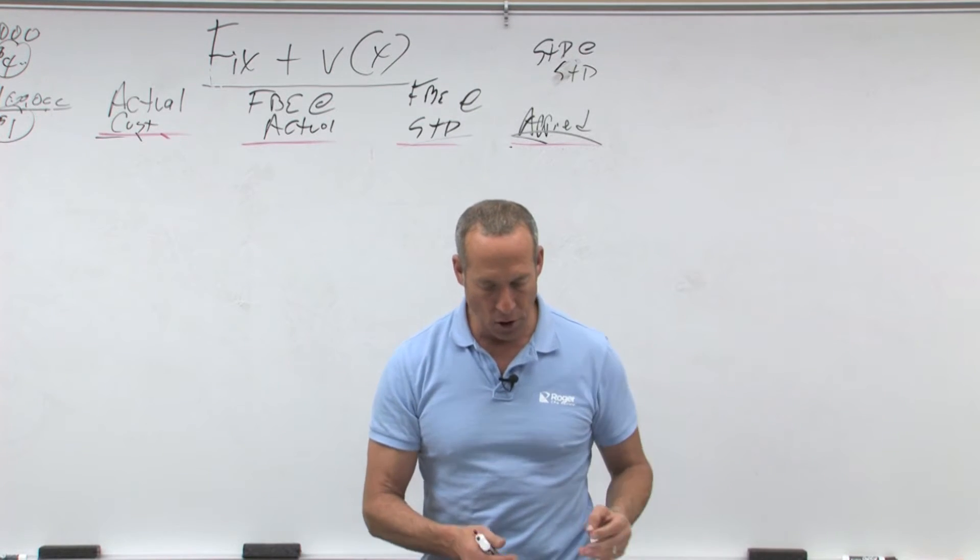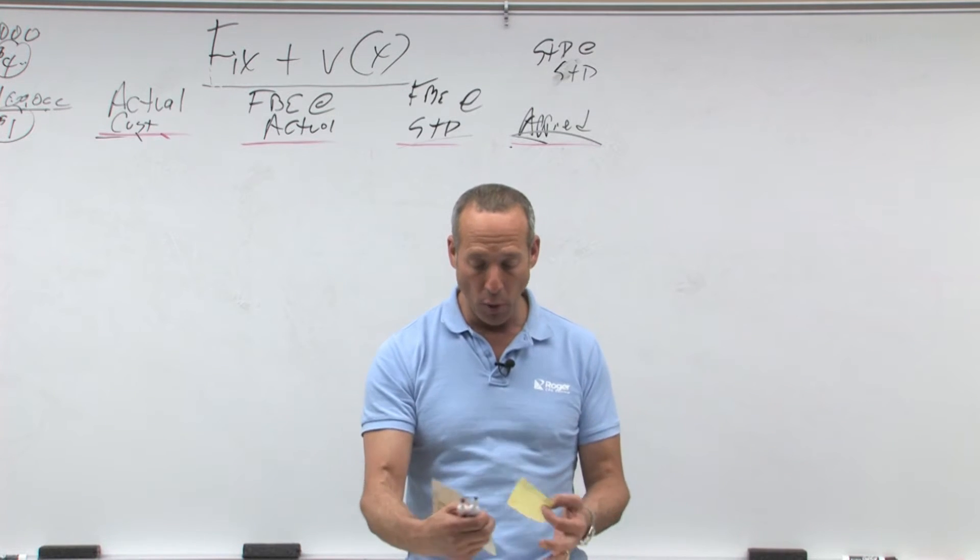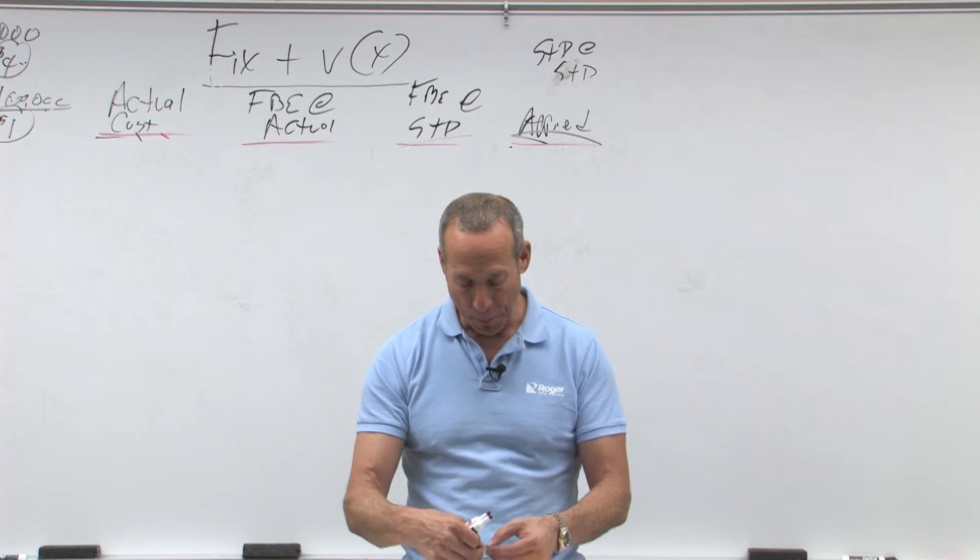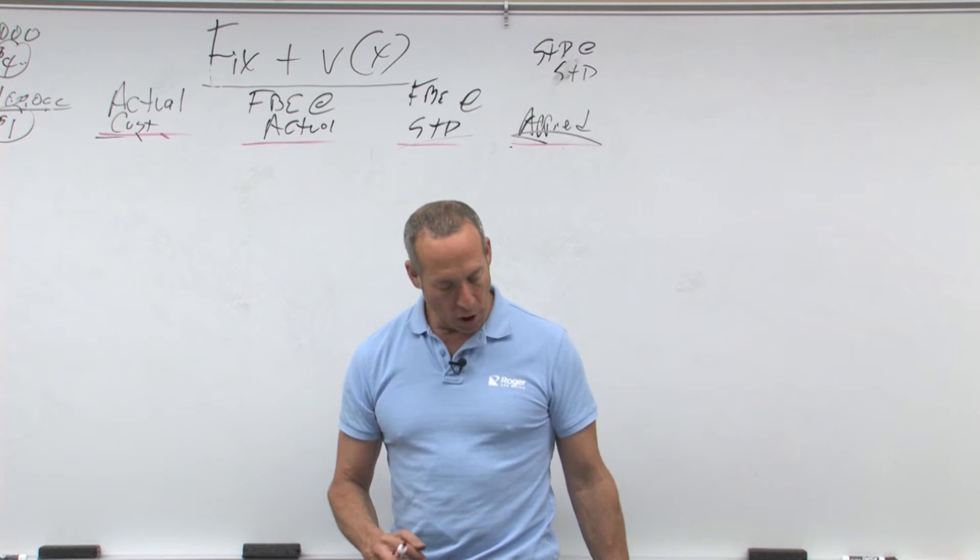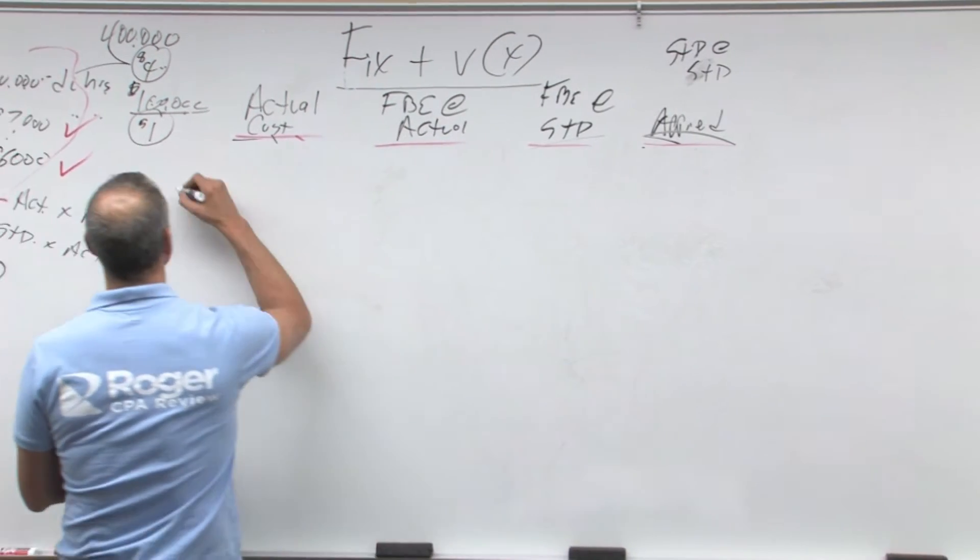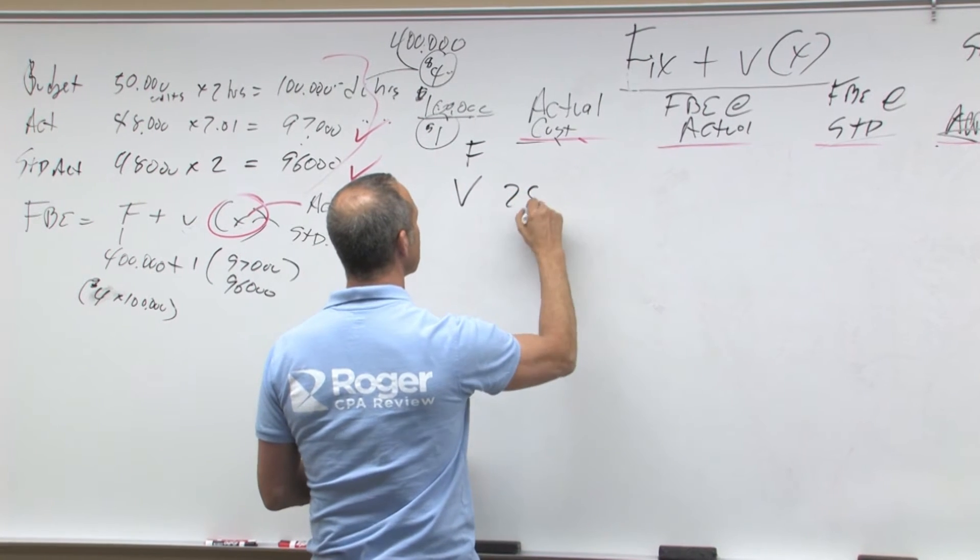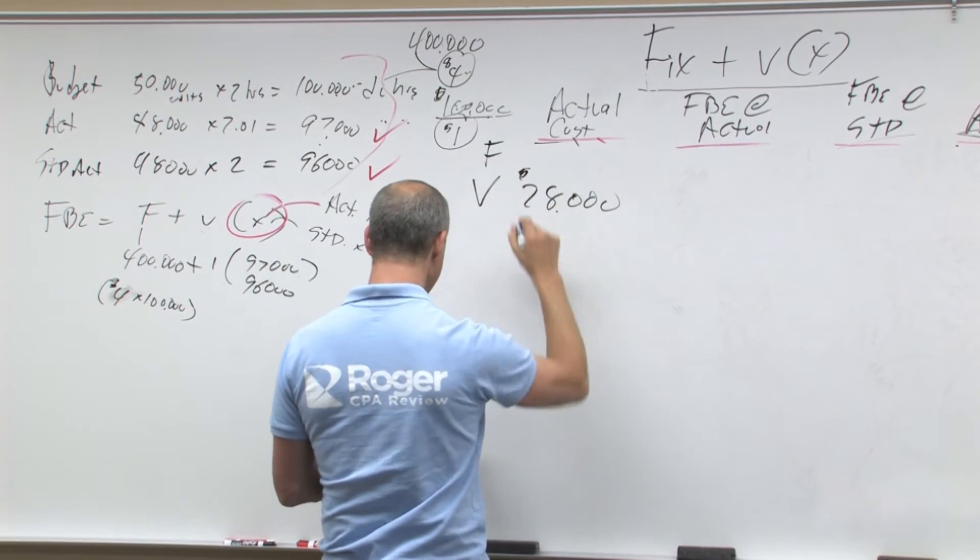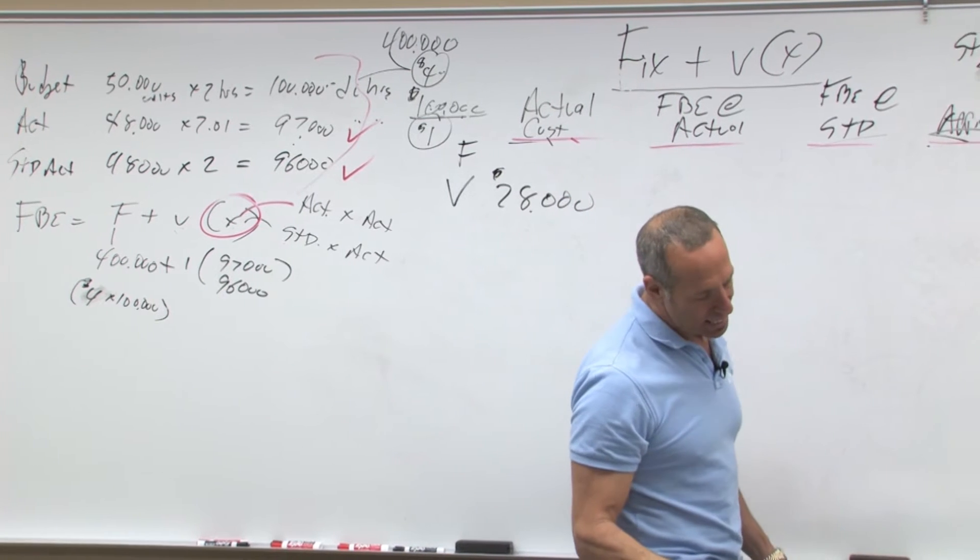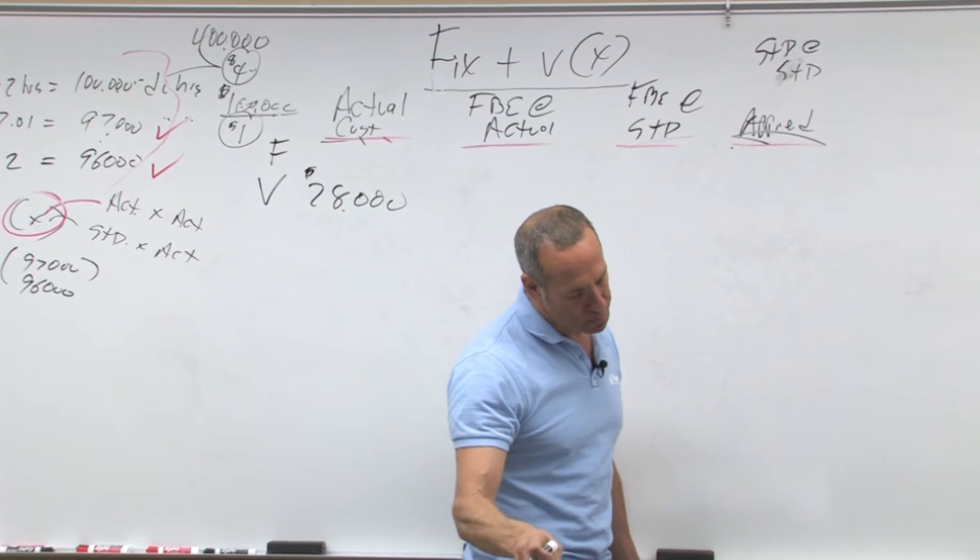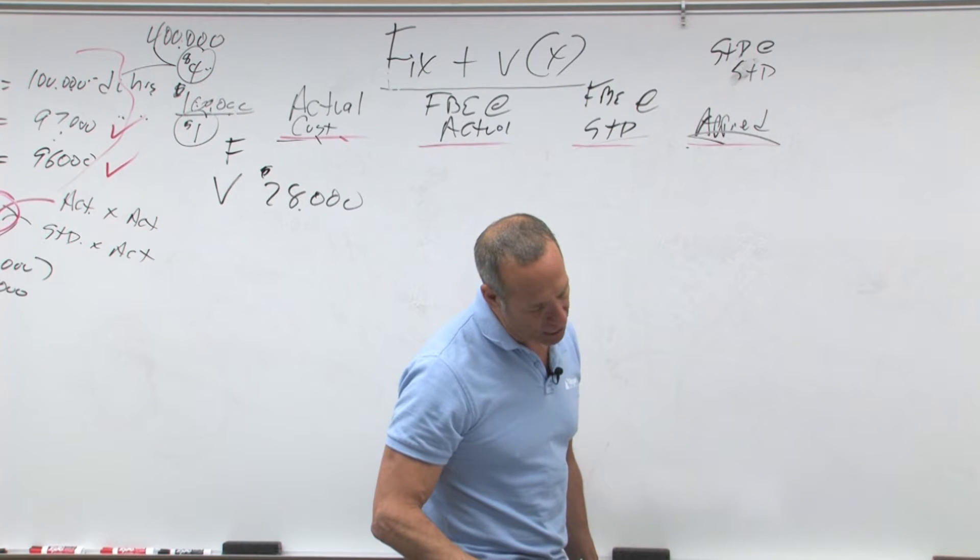So that's why, as I said earlier, what I like to do is I always like to start with my actual. Why? Because actual is given. So the actual variable overhead, we're looking only at variable in this case. So here's fixed, we don't know. Here's variable. Our variable overhead is 28,000 bucks. Now when you look at the overhead, 28,000, that's based on actual direct labor hours of 10,500.